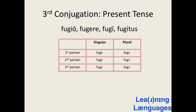Let's have a look at IO-variant verbs now. Here is the stem of fugio, and here is the present tense form of the verb: fugio — I flee; fugis — you singular flee; fugit — he, she, or it flees; fugimus — we flee; fugitis — you plural flee; fugiunt — they flee. Notice the I in the first person singular and third person plural forms — we have fugiunt and fugio, rather than fugo and fugunt.